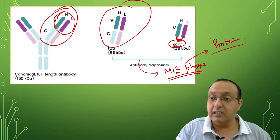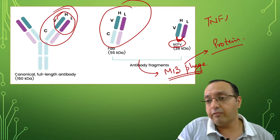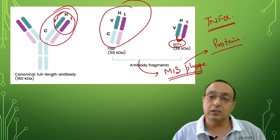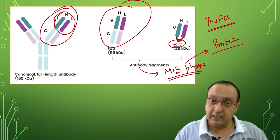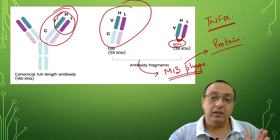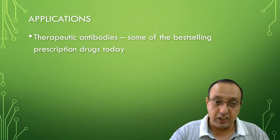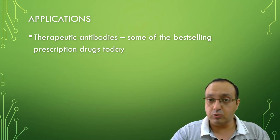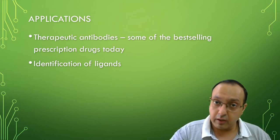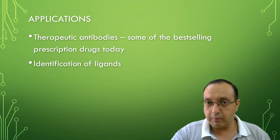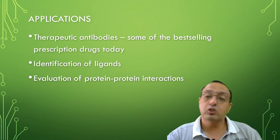One of the first proteins they developed an antibody for was TNF-alpha, which stands for tumor necrosis factor alpha. This is one of the main proteins involved in the development of rheumatoid arthritis — it is a major protein involved in inflammation. They developed antibodies which could target this protein. Phage display has found many applications: therapeutic antibodies, identification of ligands for different proteins, and evaluation of protein-protein interactions.